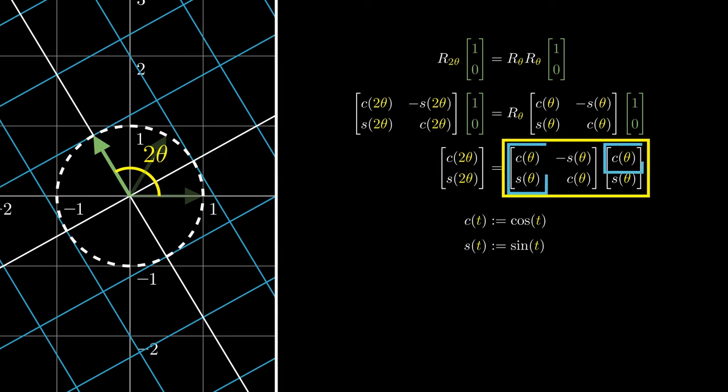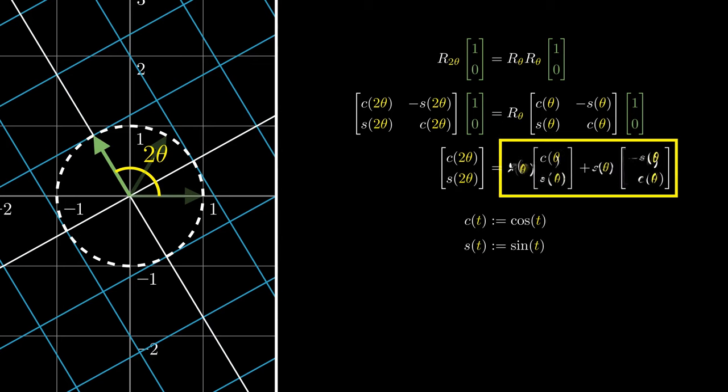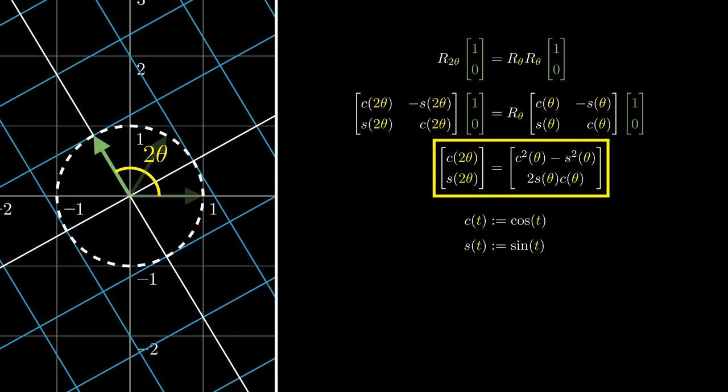We are using c theta units of c theta s theta, and s theta units of negative s theta c theta. Multiply c theta and s theta respectively, and add the vectors by adding their components. In this equation, the left-hand vector equals the right-hand vector. But using this shorthand notation,